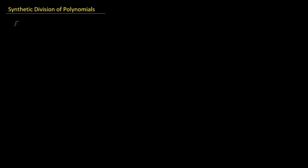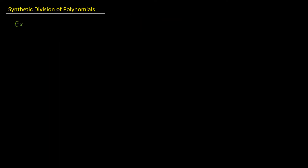We'll do one more example which involves a missing term — I've noted that in the title so you can refer back if you need to handle a missing term. The question is: factorize x³ minus 4x² minus 25, where x minus 5 is a factor.